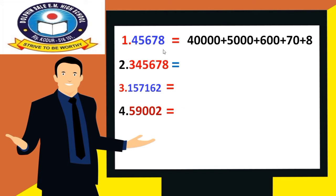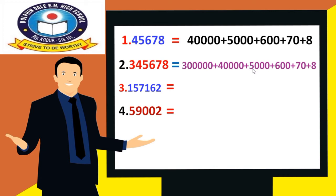Let's go to the next one: ones, tens, hundreds, thousands, ten thousands, one lakh. The last digit is in lakhs place — three after five zeros means three lakhs. Four in ten thousands place: forty thousand. Five in thousands place: five thousands. Six in hundreds place: six hundred. Seven in tens: seventy. Eight in ones: eight. So totally: three lakhs plus forty thousand plus five thousand plus six hundred plus seventy plus eight.